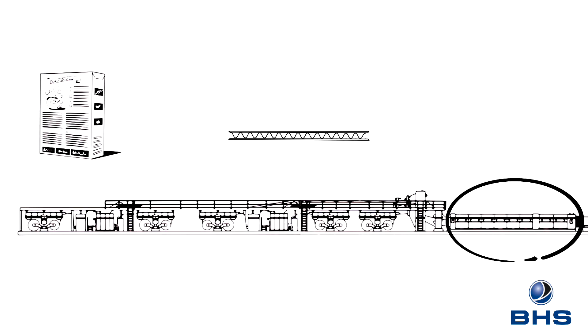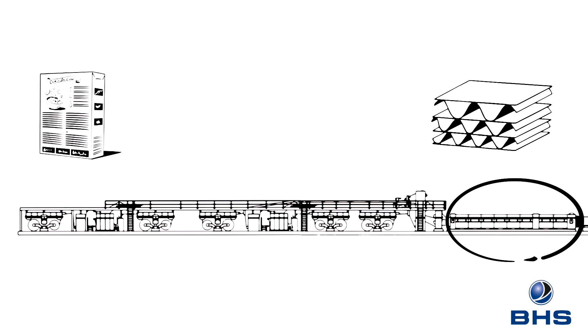To produce double or triple wall corrugated board, as described previously, two or three single-faced corrugated webs are glued to each other.